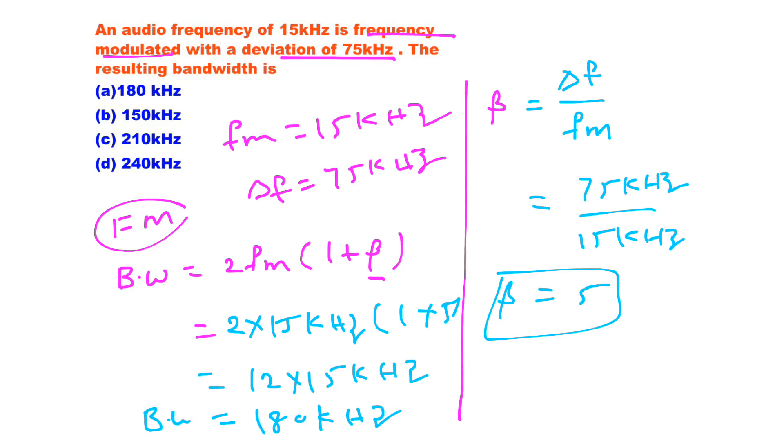So this much bandwidth is needed for the audio frequency of 15 kHz with deviation of 75 kHz. So by observing the options, option A is the correct option.